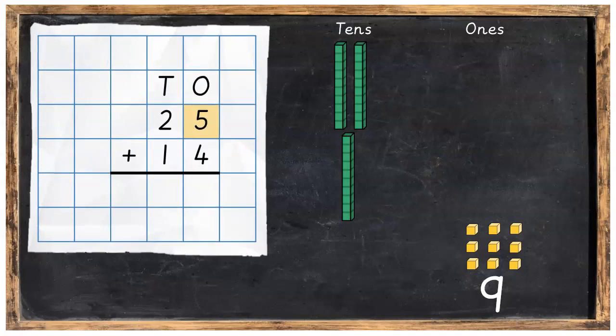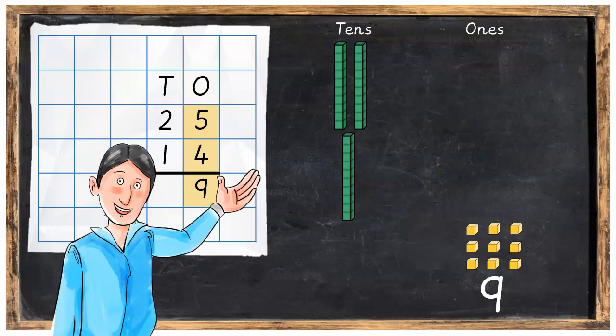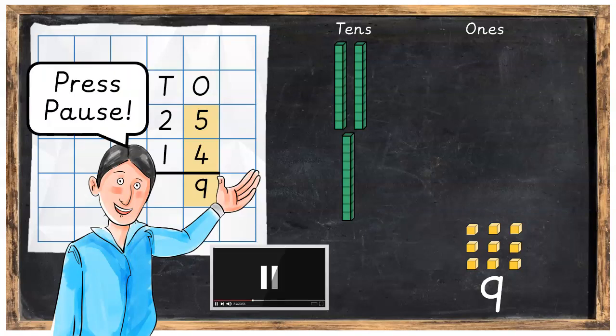Then we go back over to our sum and we add the five plus four makes nine. What I would like you to do now is add the units or the ones just like I have done. Press pause and then when you're ready press play.